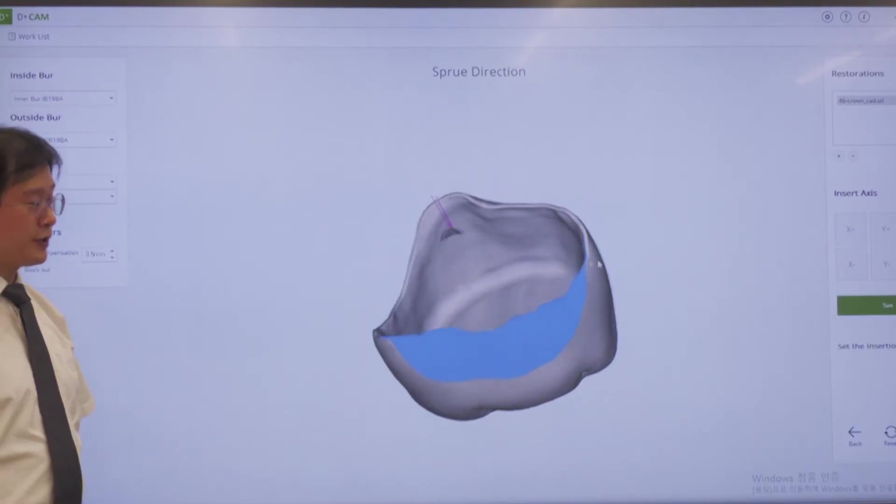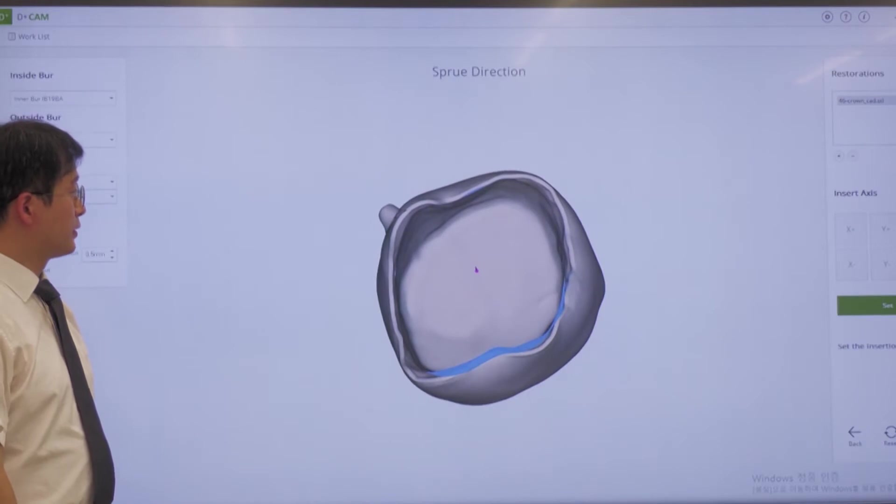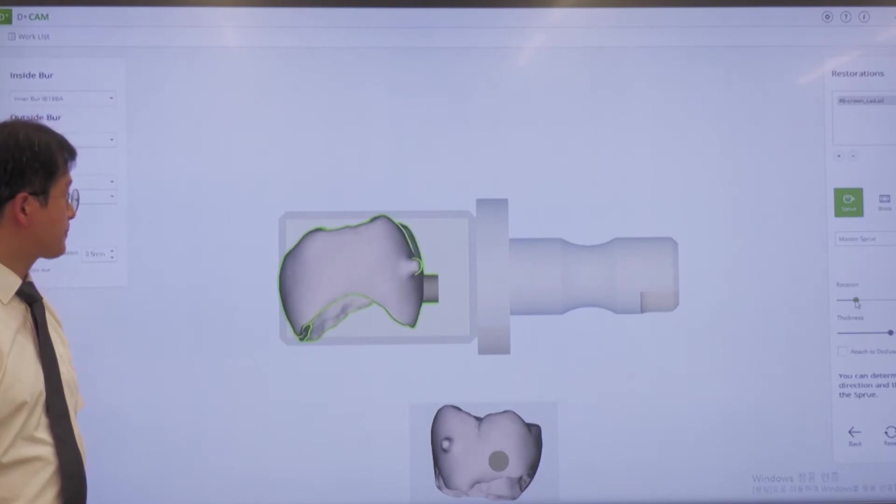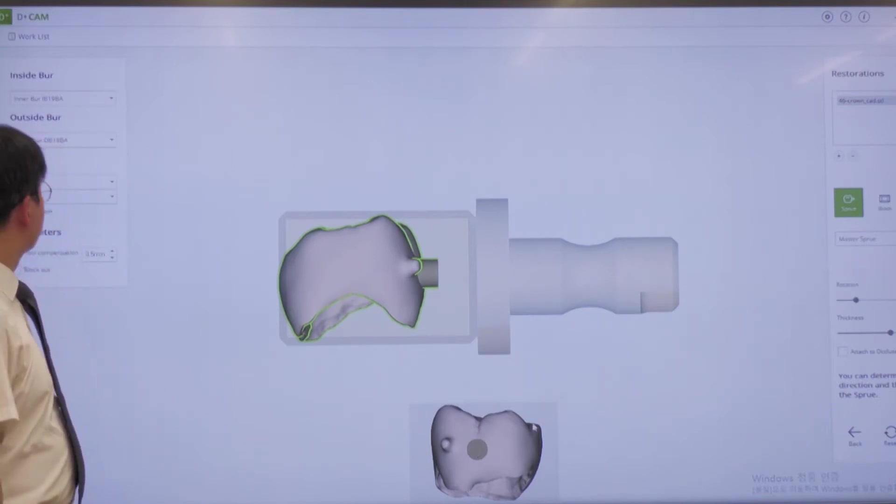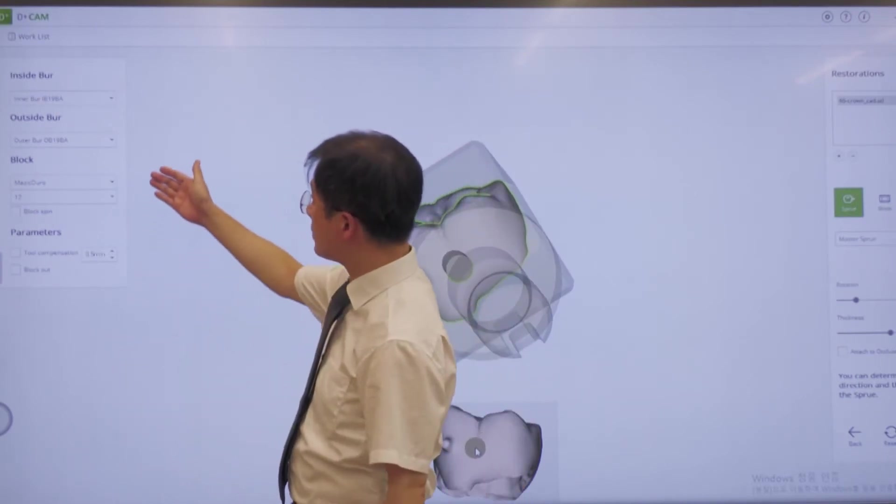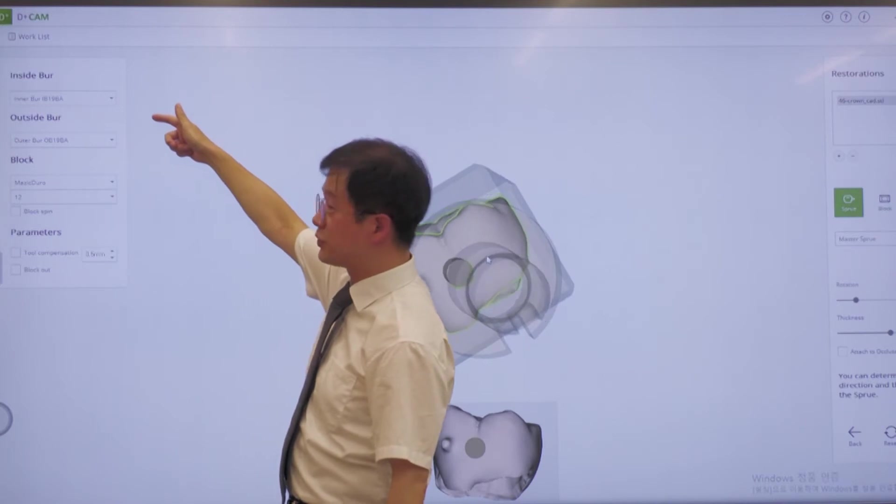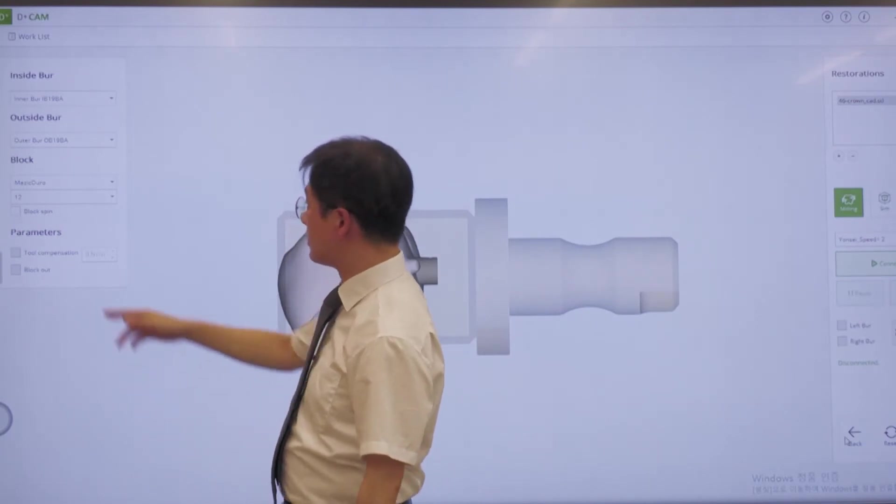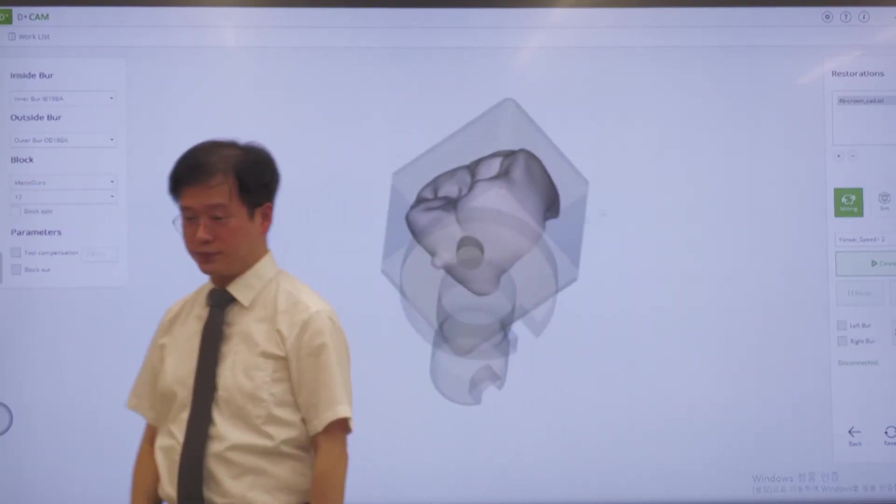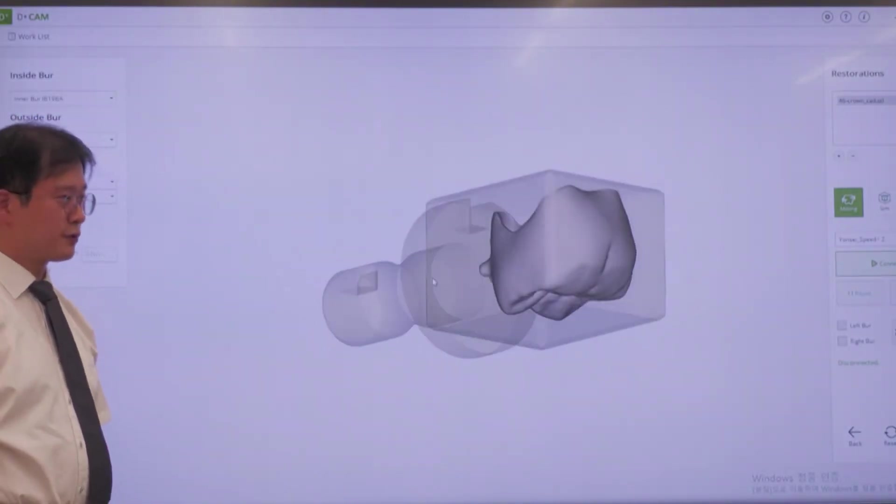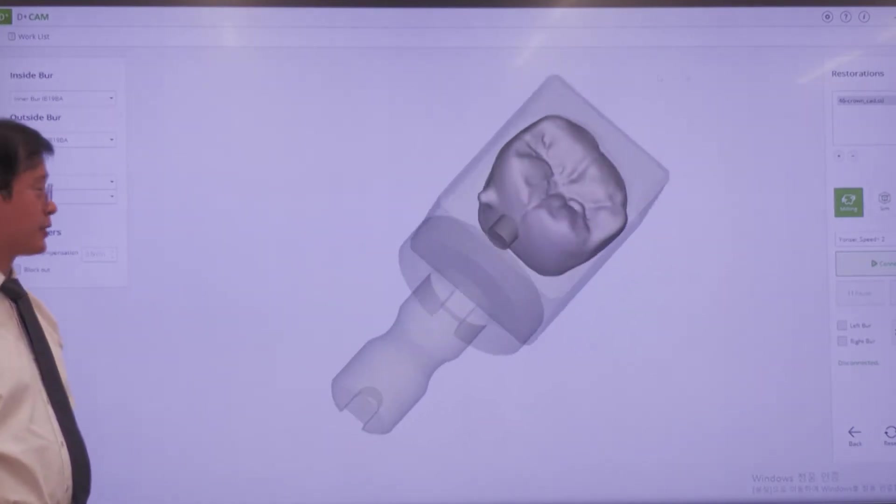We have to finalize the screw positioning. On this side, I previously set the burrs, inner burr and outer burr, and there is a block name. We are milling Magic Jewel block from Vericom. This is Korea, South Korea company.